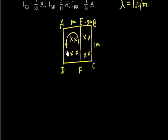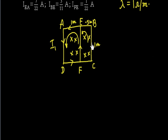In Loop 1 (AEFD), call the circulating current I1 — flowing in the counterclockwise direction. In Loop 2 (EBCF), there will also be an induced EMF, requiring a current I2 in that loop to decrease the increasing flux. In the shared segment EF, the current flows upward as I1 and downward as I2, so the net current in that segment is I1 minus I2 upward.